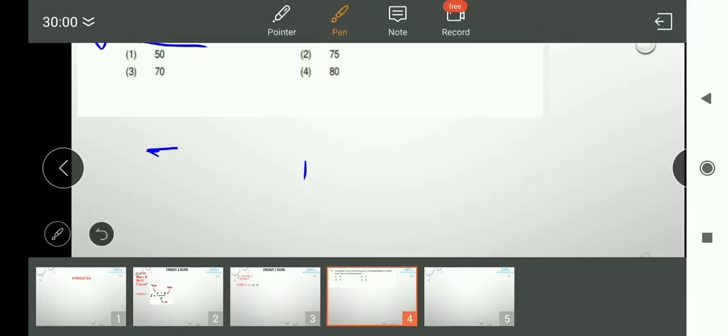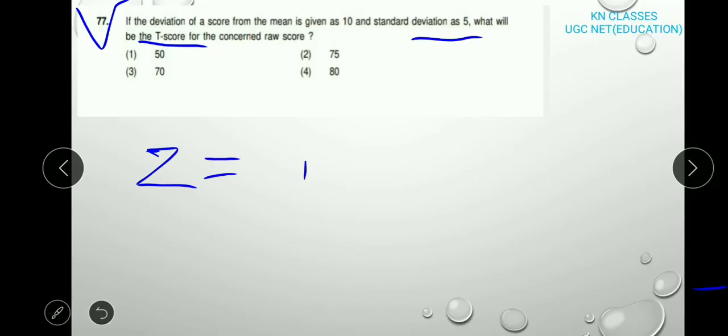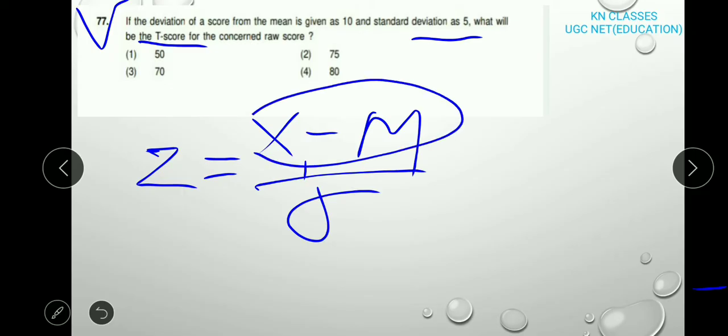As you know, Z is X minus M divided by standard deviation. So here, deviation of a score from the mean, this is X minus M. Deviation of a score from the mean is given as 10. It means X minus M is 10.